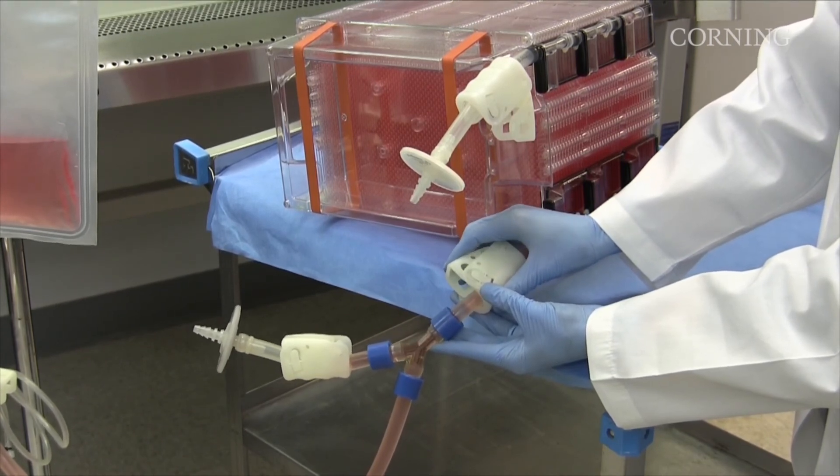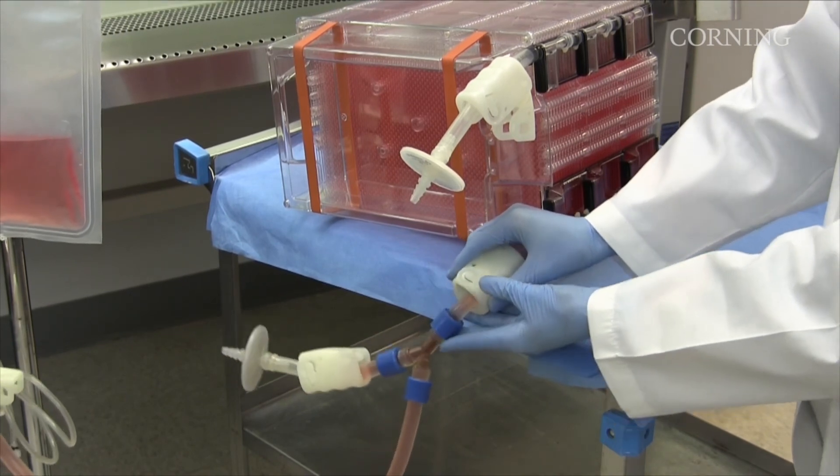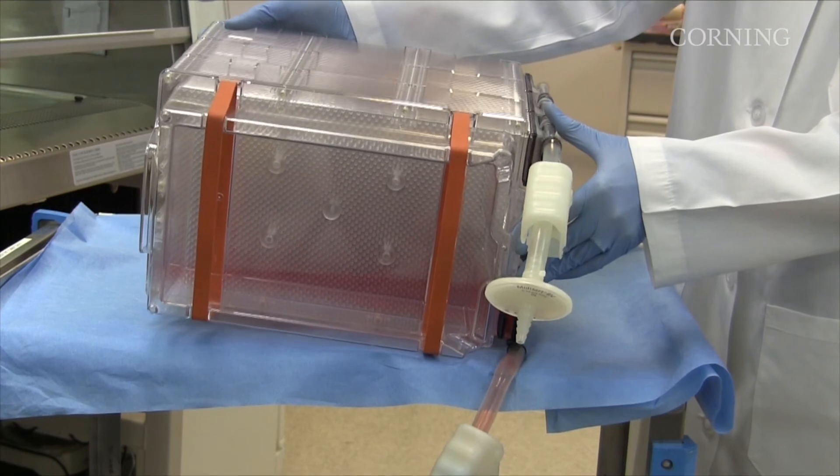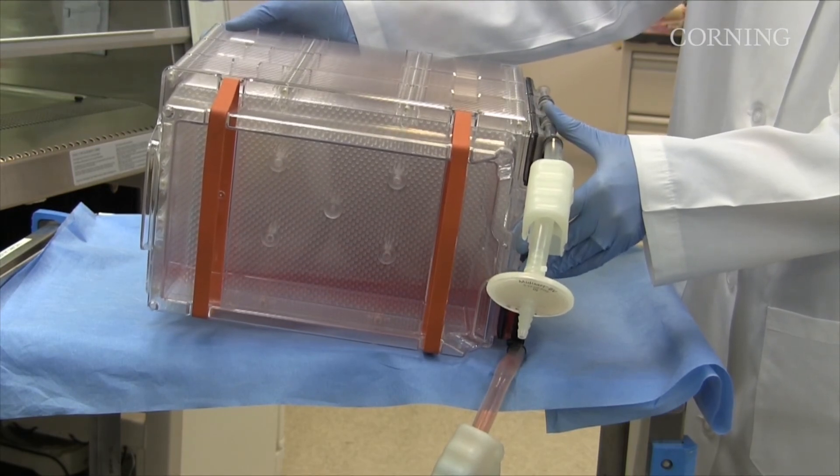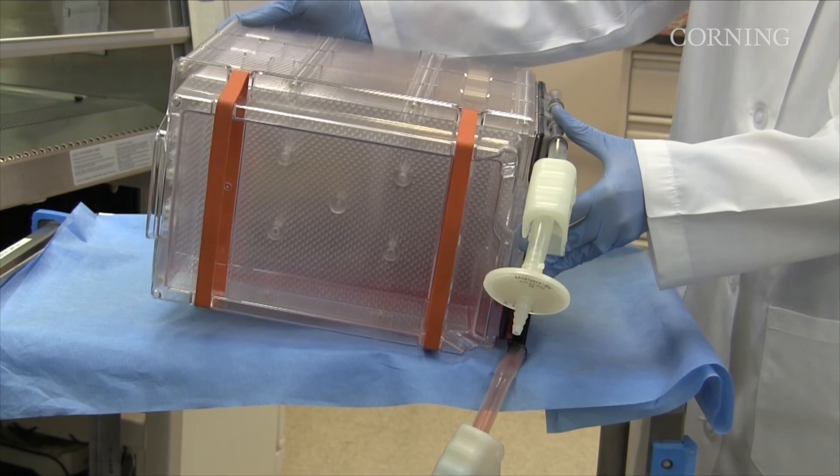If liquid drains too quickly, a vacuum will be created inside the vessel that can damage the cells and the vessel. During the empty procedure, elevate the back end of the HyperStack vessel using a clamp or small object to about a 10 degree angle. This will ensure that the HyperStack vessel drains completely.